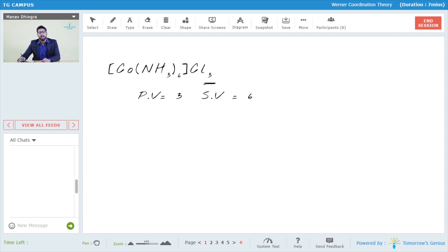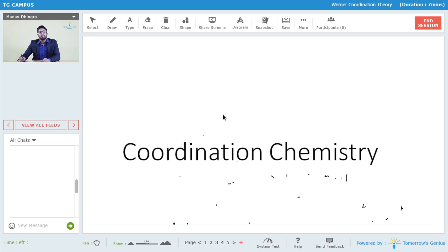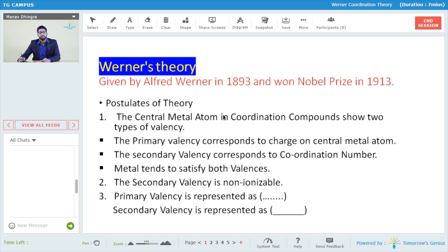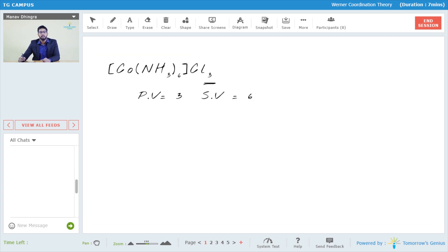For that you should know the postulates he gave. The postulate said that the primary valency is satisfied by the charge. What's the charge on cobalt here, which is our central metal atom? It's plus 3. That's why the primary valency came out to be 3, and how many ligands are there? How many lone pairs are donated to the central metal atom? Six.